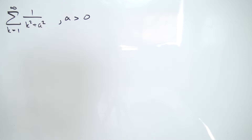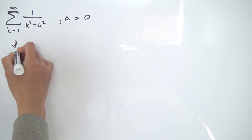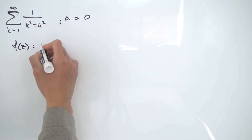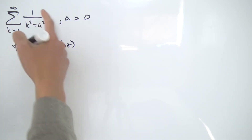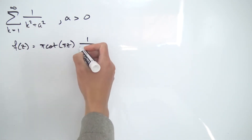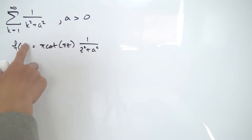We want to find a function f(z) to contour integrate. When dealing with sums like these, a nice choice is f(z) = π times the cotangent of πz, multiplied by whatever is inside the sum but with the index replaced by z. So we'll have 1 over z squared plus a squared instead of k squared plus a squared. This outside factor gives poles at the integers, and those poles have residue equal to one — which means the residue of the whole function at each integer is just the summand.